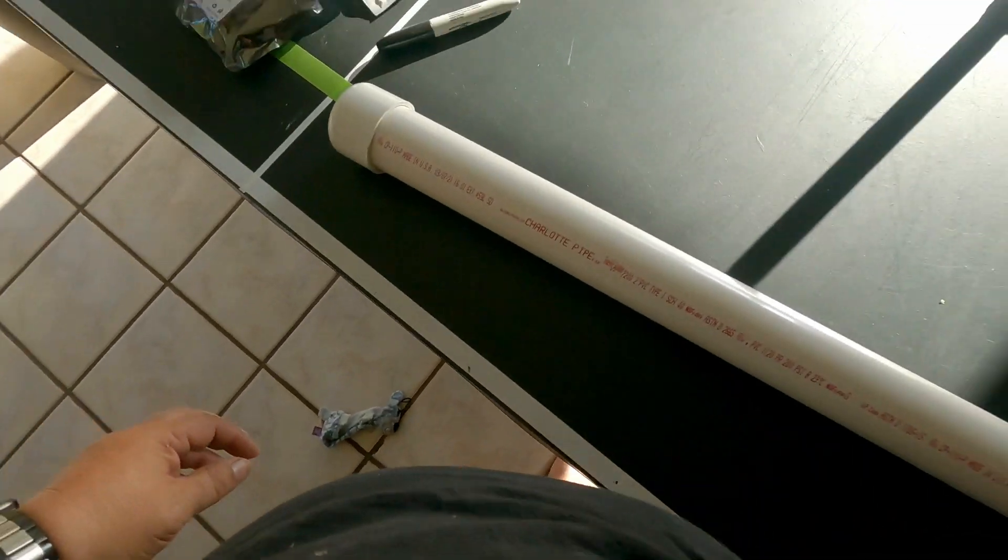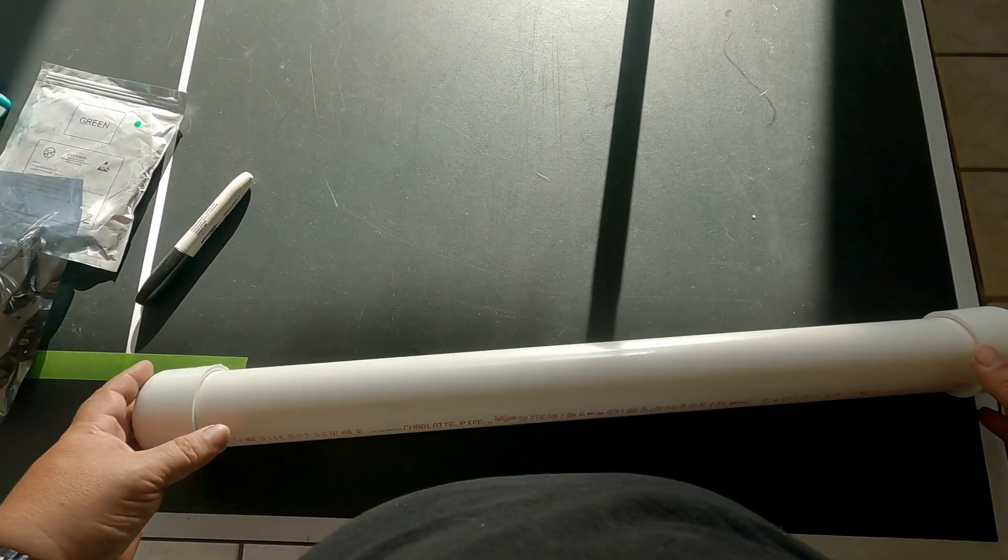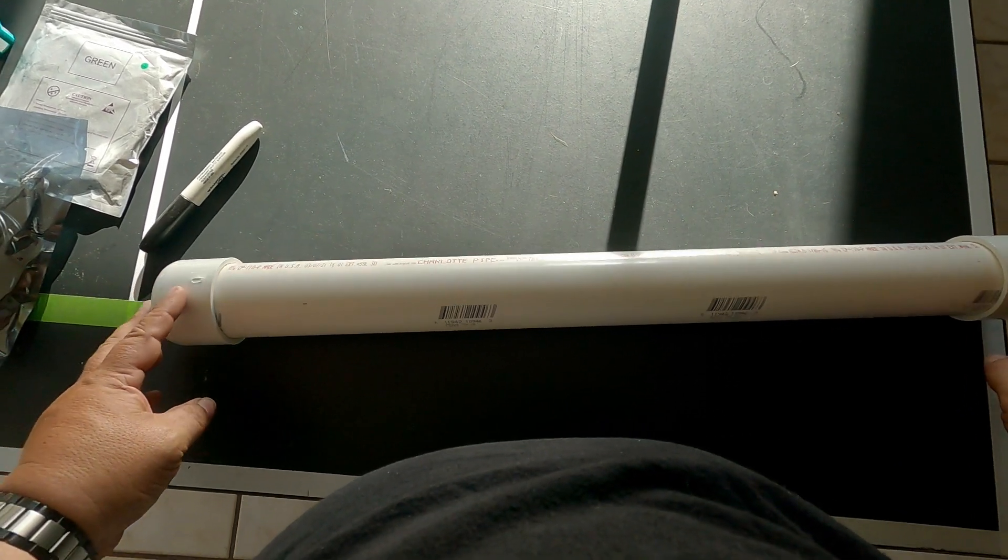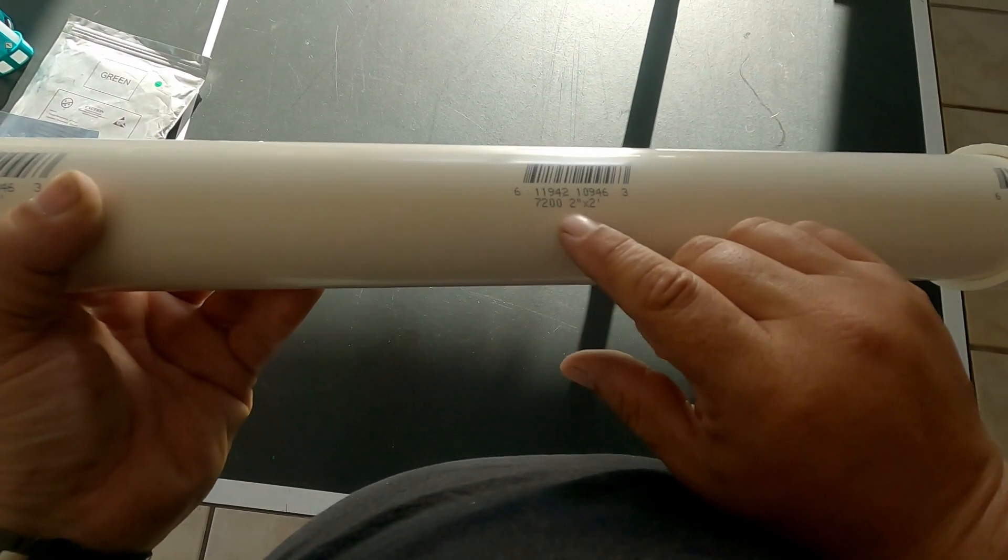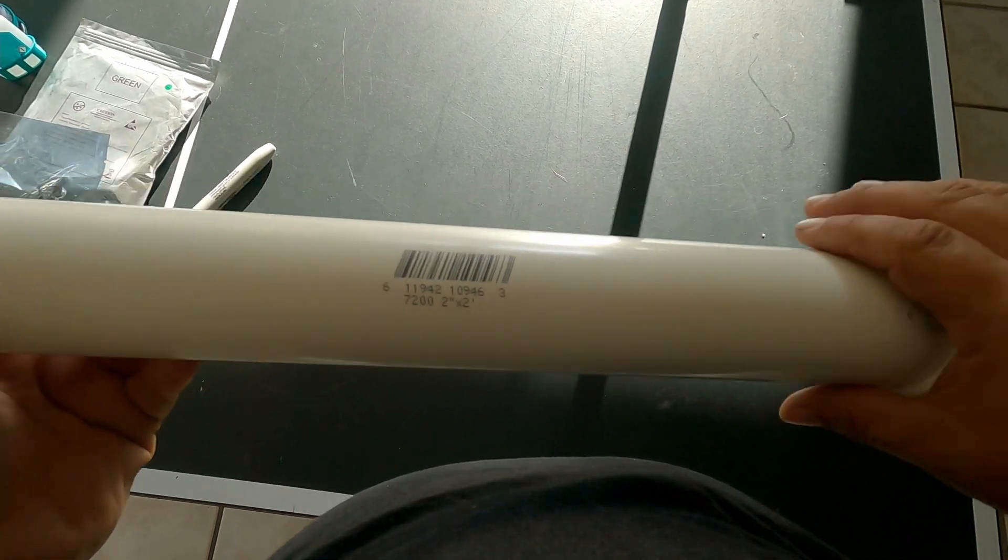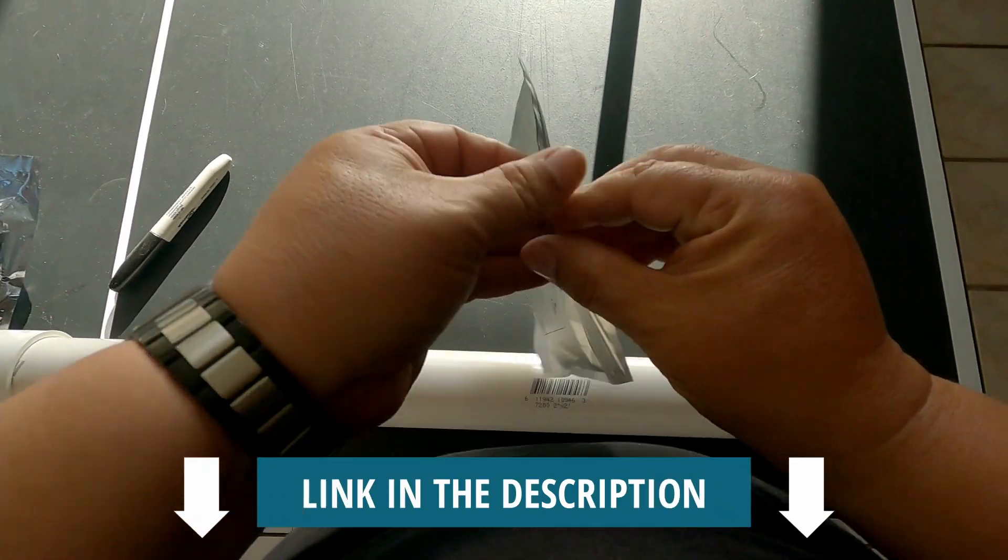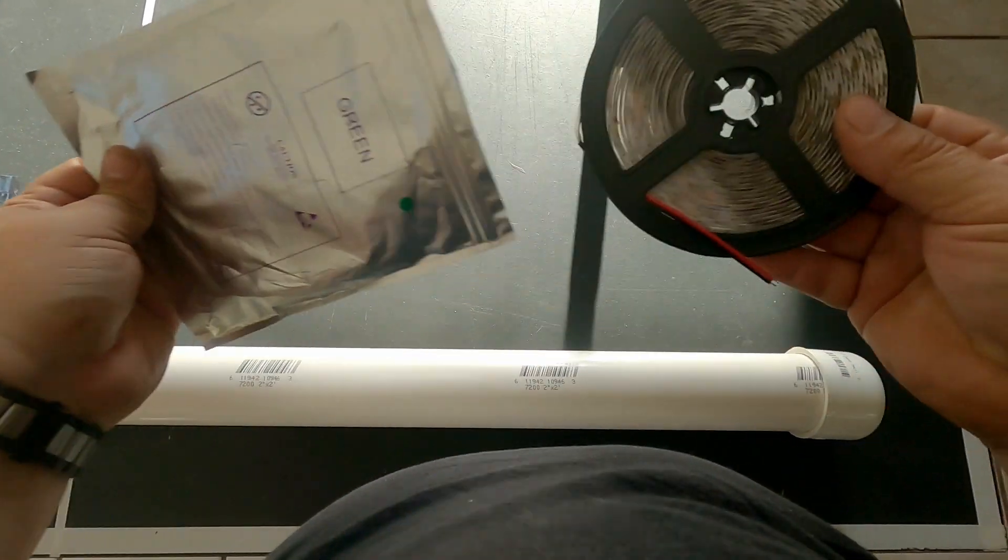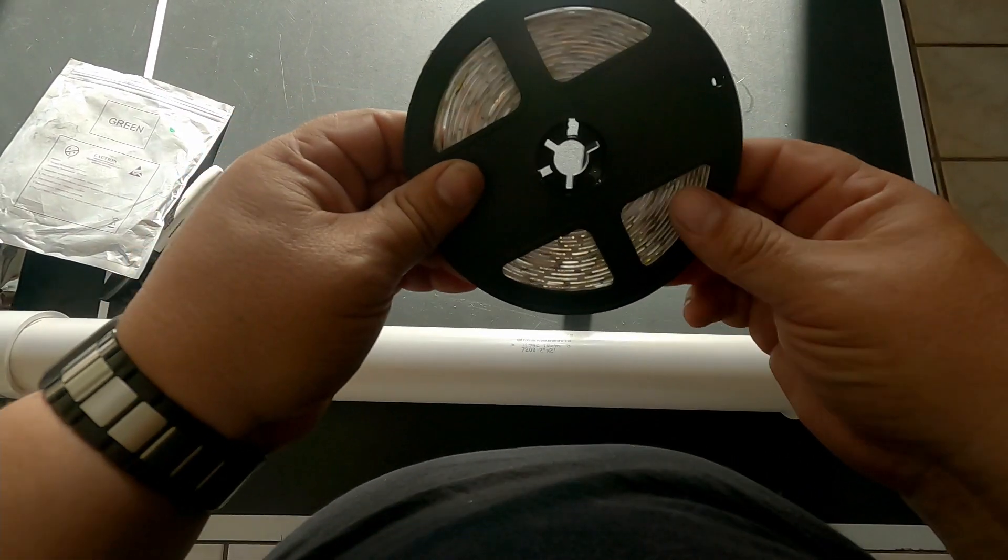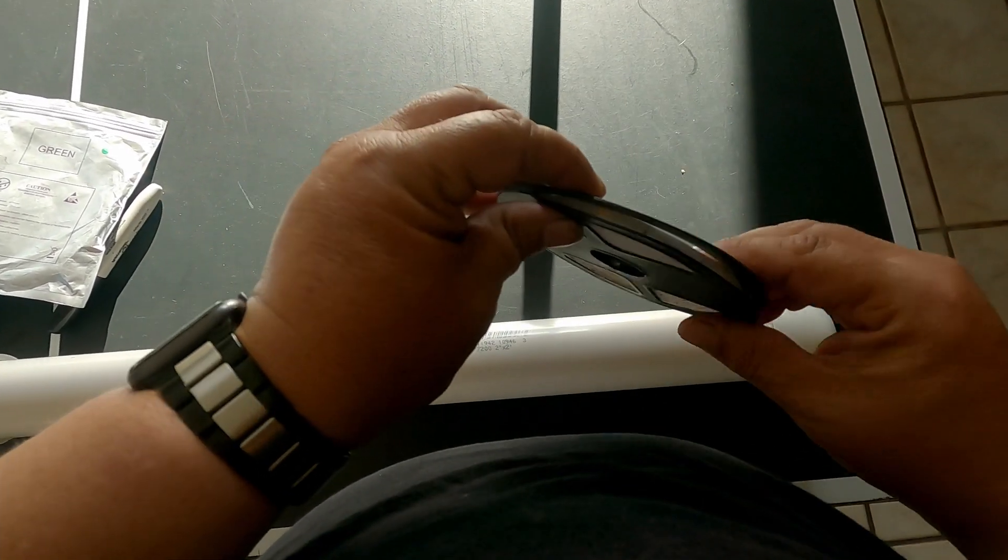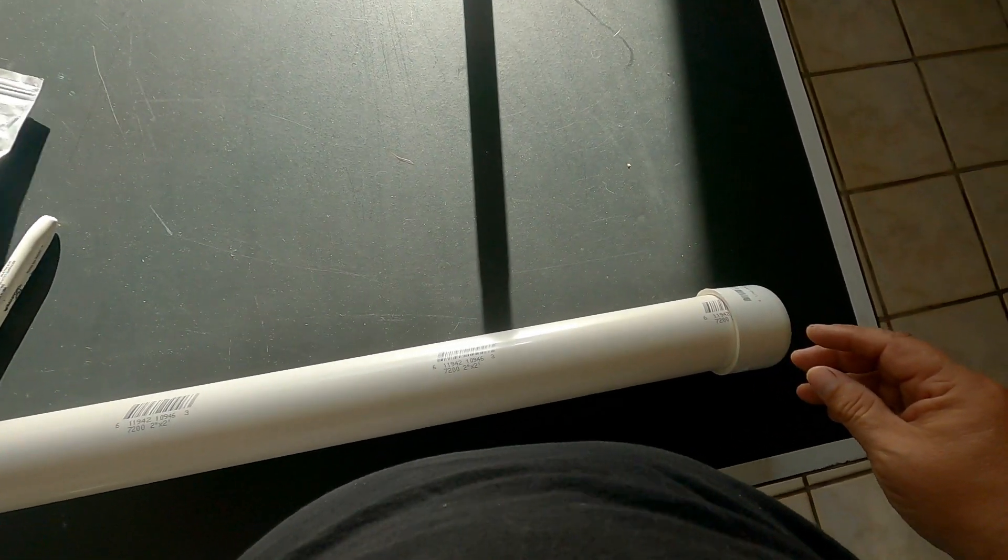Alright, so today we're going to make a green fishing light that you can submerge and use from the dock. I got this piece of two inch PVC. We're going to put these green lights, just little LED strip lights. I'm going to wrap those around it, turn it into a light that you can submerge in the dark.